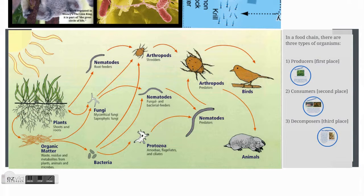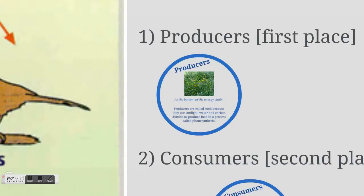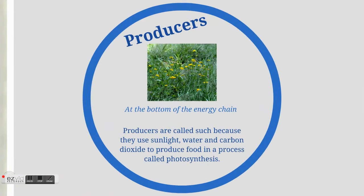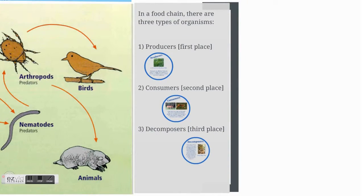Let's look a little deeper into producers. Producers are not called producers for no reason — they're at the bottom of the food chain, but they're producing all that energy. They use sunlight, water, and carbon dioxide to produce glucose and energy in a process called photosynthesis. Without producers, we wouldn't be alive.